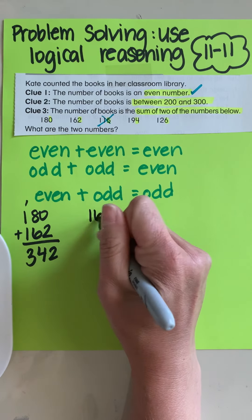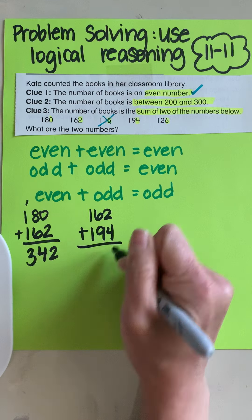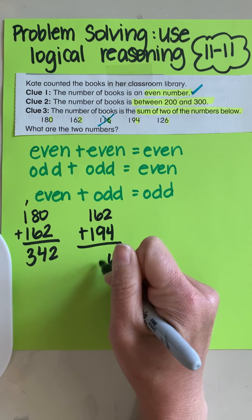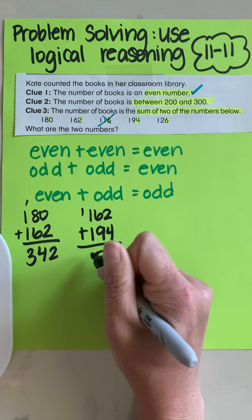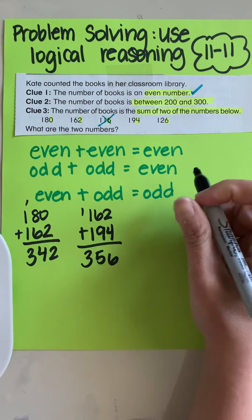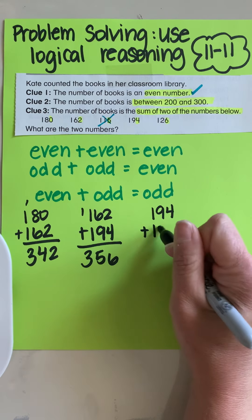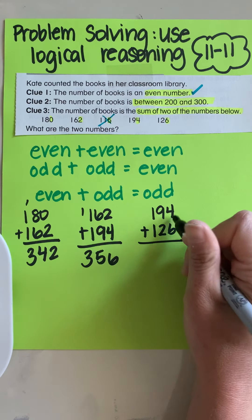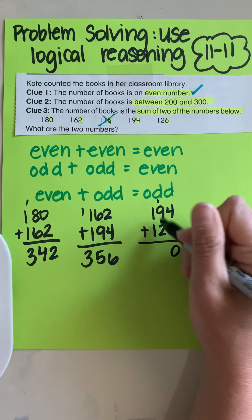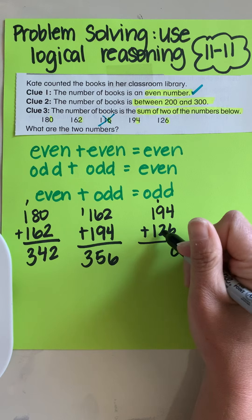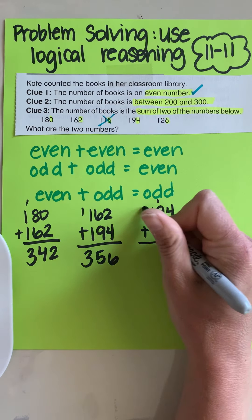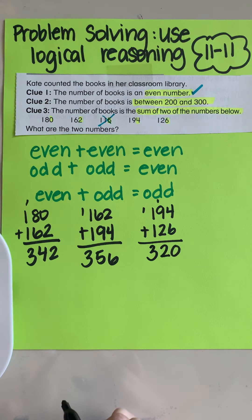Let's do 162 plus 194. Six, five plus nine is 15. Carry the one. Again, too big. Let's do 194 plus 126. Four plus six is 10. Carry the one. One and nine make 10. Plus two more is 12. Carry the one, 320. You know what? I am noticing these are all above 300.